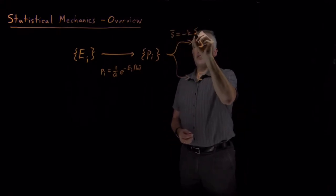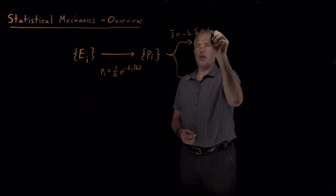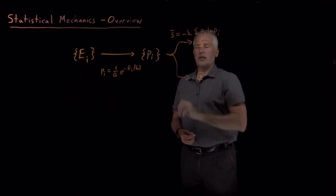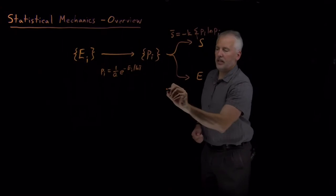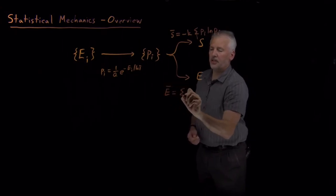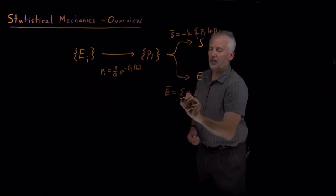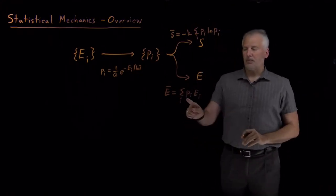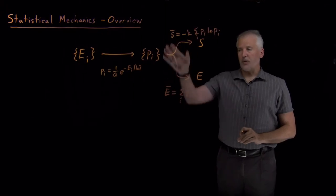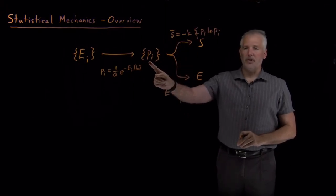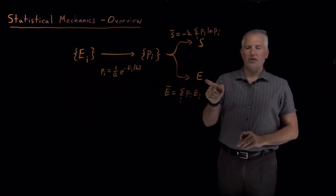The average energy, the intensive energy in the system, can be calculated from the probabilities and from the energies by summing up probability times average energy. We have equations that once we have the probabilities will tell us what is the entropy of the system, what is the energy of the system.